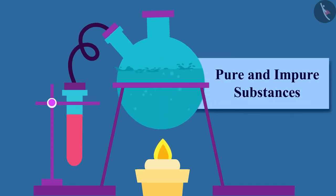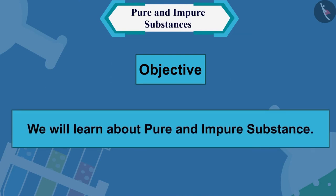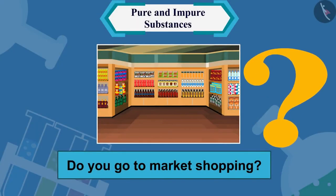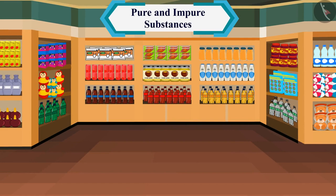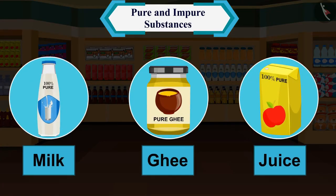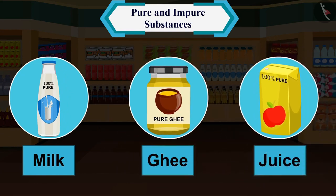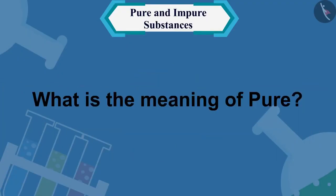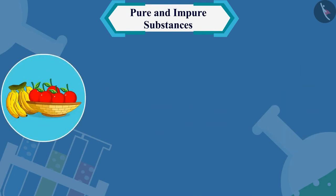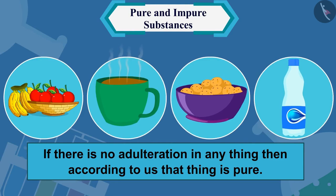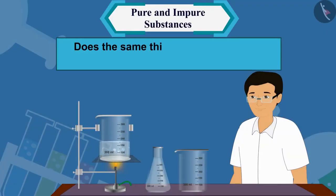Welcome to this video session. Today we will learn about pure and impure substances. Do you go to the market for shopping? If you look closely at the cartons of milk, ghee, juice, etc. being sold in the market, you will find '100% pure' written on all the boxes. Can you tell us what is the meaning of 'pure'? For ordinary people like you and me, if there is no adulteration in anything, then that thing is pure.